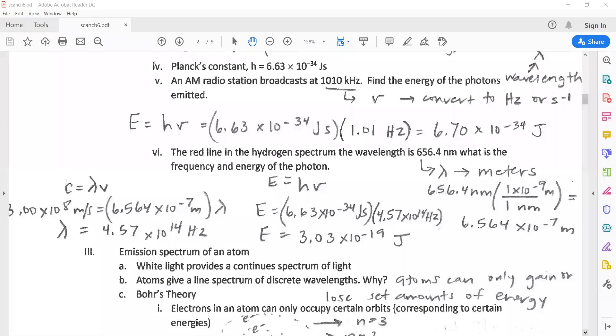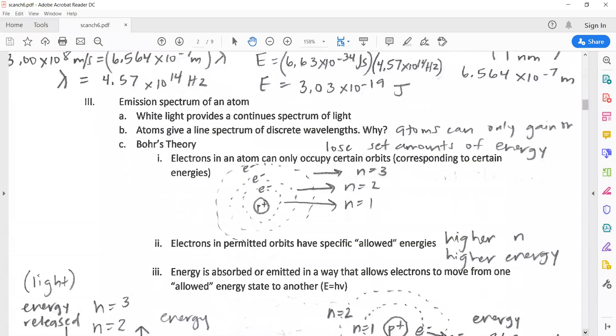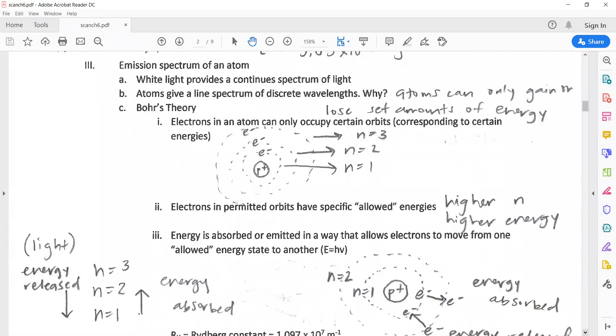Here's video two of chapter six and we're looking at the emission spectrum of atoms. So what we're looking at here is how atoms gain and lose energy and how wavelengths and light help us determine how much energy an atom is gaining and losing. Atoms give off line spectrum of discrete wavelengths, meaning atoms can only gain or lose very specific amounts of energy.